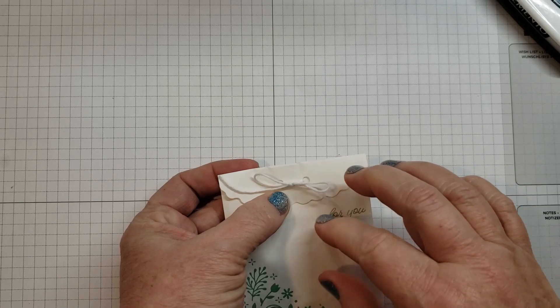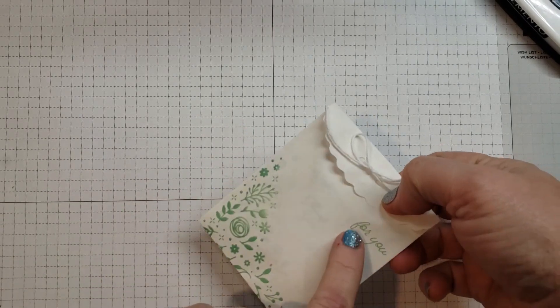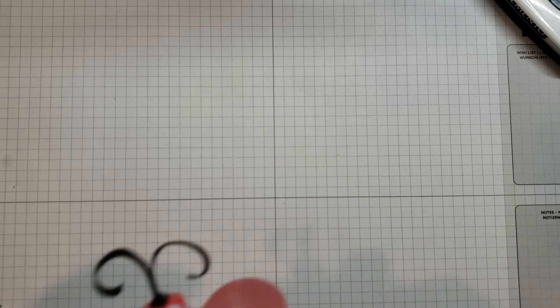I put a little bit of ribbon twine through there, a glue dot to hold it closed, and stamped 'for you' on there and it's ready to go.